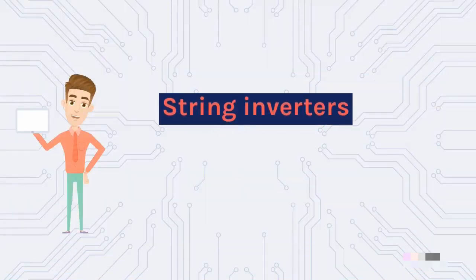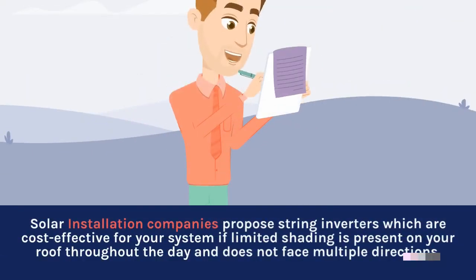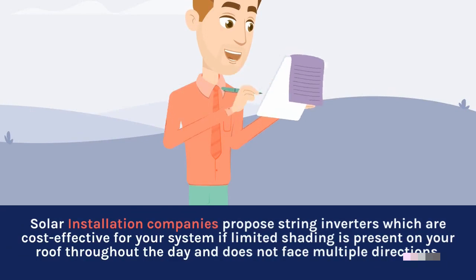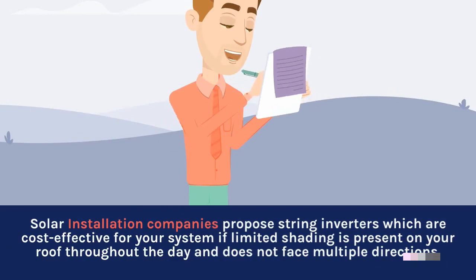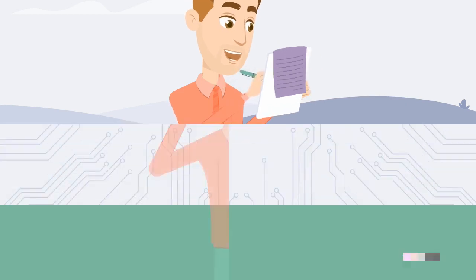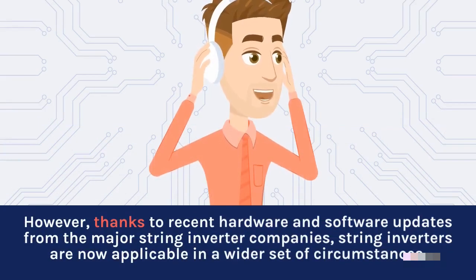Solar installation companies propose string inverters, which are cost-effective for your system if limited shading is present on your roof throughout the day and your roof does not face multiple directions. However, thanks to recent hardware and software updates from the major string inverter companies, string inverters are now applicable in a wider set of circumstances.